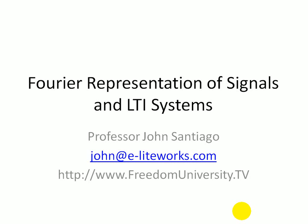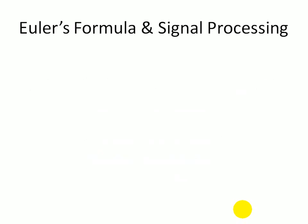As additional background before we provide a thorough discussion of Fourier representation of signals and linear time invariant systems, we introduce Euler's formula. Euler's formula is a mathematical formula in complex analysis that shows the deep relationship between trigonometric functions and the complex exponential function. It's one of the most remarkable formulas found in mathematics, and it states that E to the J theta is equal to cosine theta plus J sine of theta.